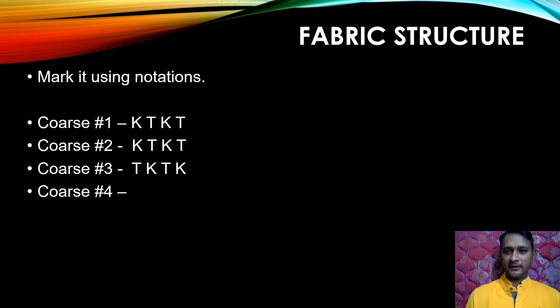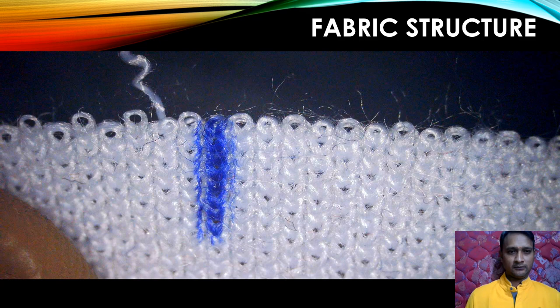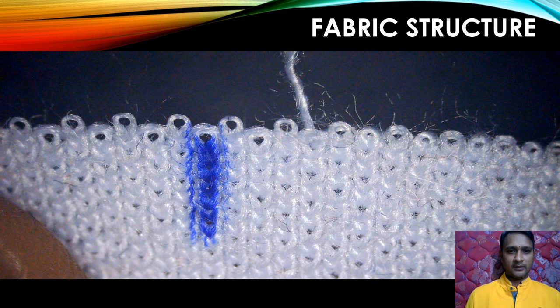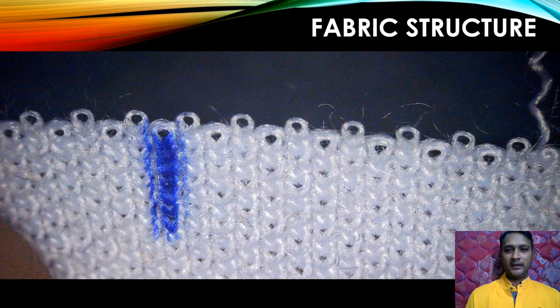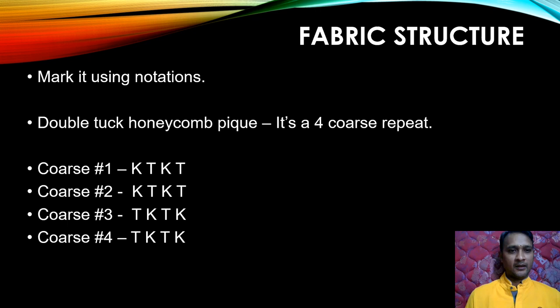Now I am going to unravel course number four. After that vertical line — tuck, knit — the same as what we found in course number three: tuck, knit, tuck, knit. It is getting continued in course number four as well. So we can mark course number four as tuck, knit, tuck, knit.